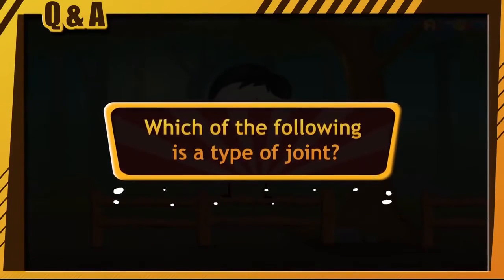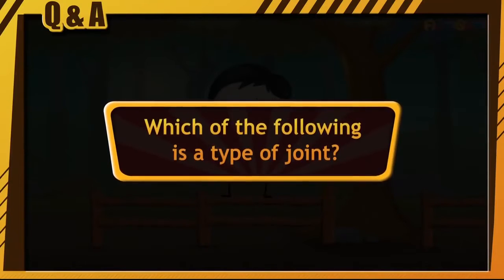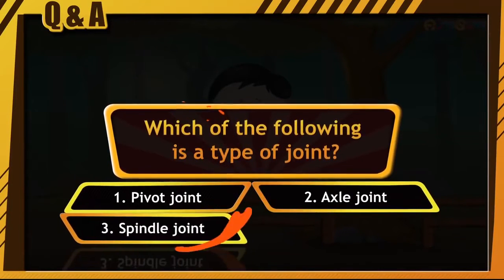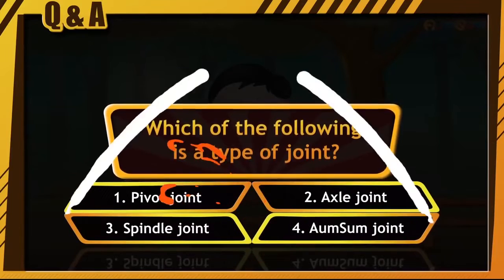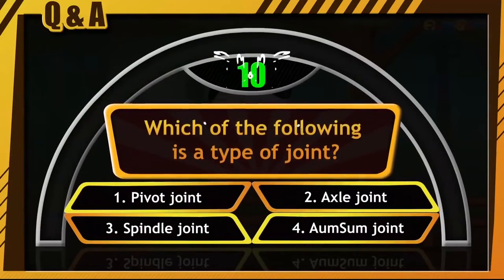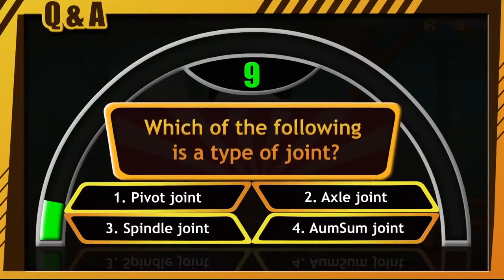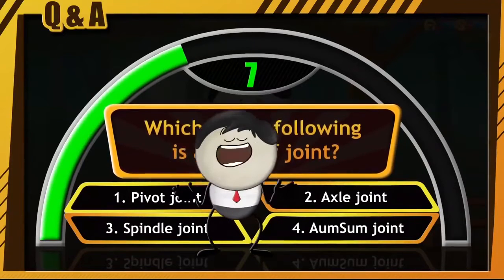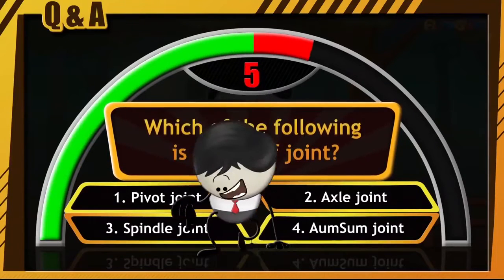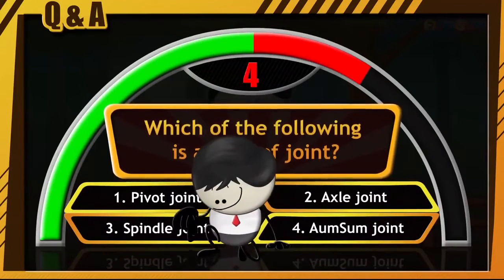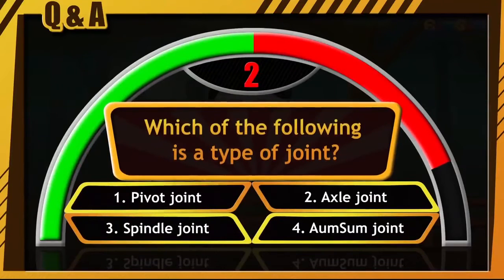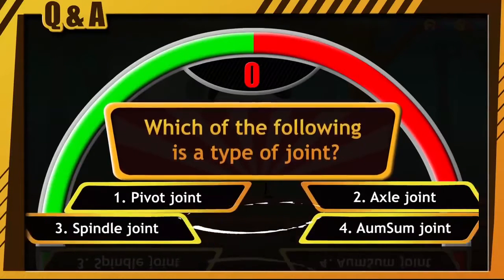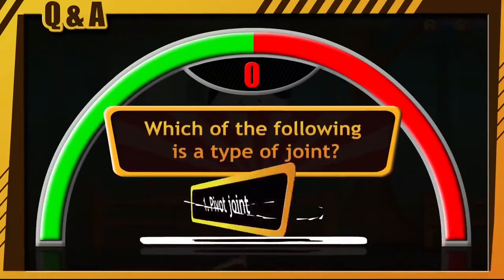Which of the following is a type of joint? Pivot joint, axle joint, spindle joint, or AumSum joint. Your time has begun — think fast and write your answer in the comments section. The answer is option number 1, that is pivot joint.